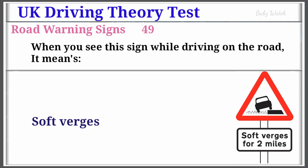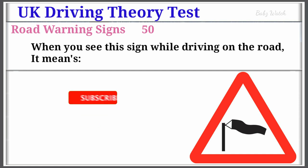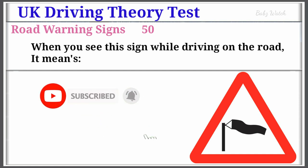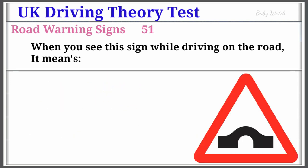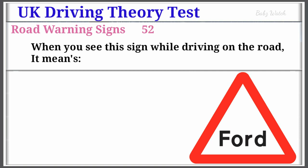UK Driving Theory Test Road Warning Sign Number 50: When you see this sign while driving on the road, it means Side Winds. Warning Sign Number 51: When you see this sign while driving on the road, it means Hump Bridge.